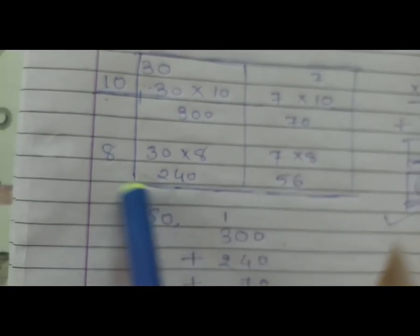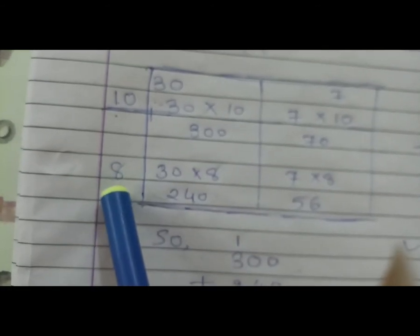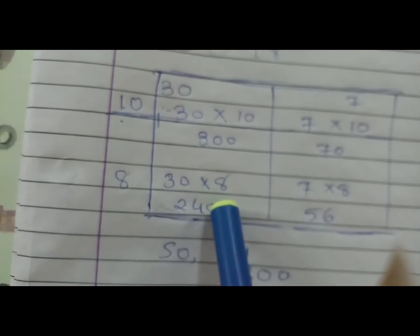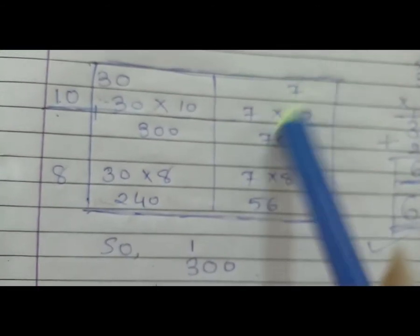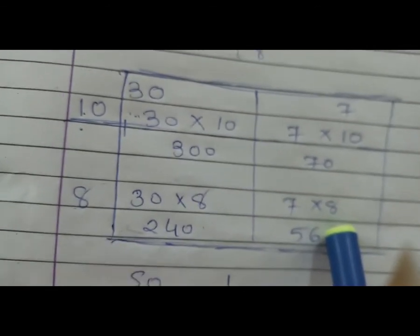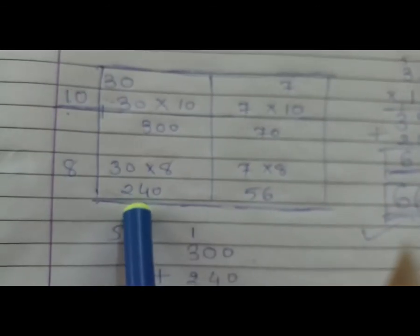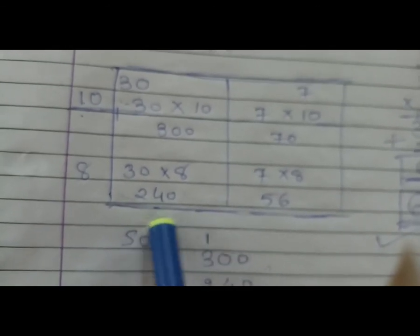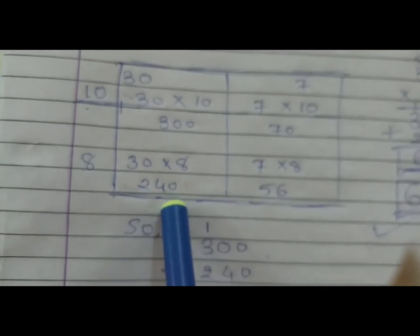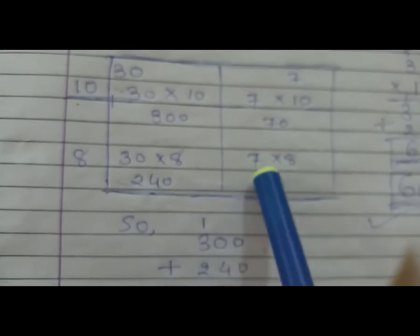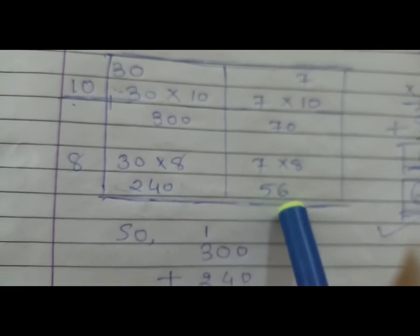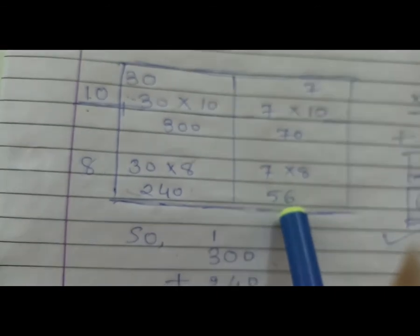अभी इसकी बारी — 8 की. अभी 8 का हम multiply 30 से करेंगे. तो पहले 30 को नीचे लाएंगे, multiply 8 करेंगे. इसी तरह से 7 को नीचे लाएंगे, multiply 8 करेंगे. इसका multiply आएगा: 3 8s आए 24 — यहाँ पे लिखेंगे 24, यह 0 इसके साथ 8 — answer आया 240. अभी 7 और 8 का multiply: 7 8s are 56.